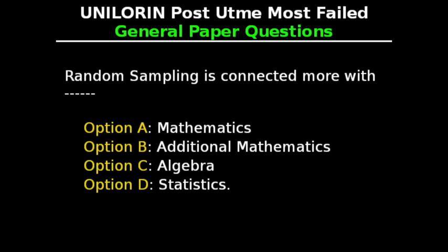General Paper Questions. This question says: Random sampling is connected more with — Option A: Mathematics, Option B: Additional Mathematics, Option C: Algebra, Option D: Statistics. The correct answer to this question is Option D, Statistics.